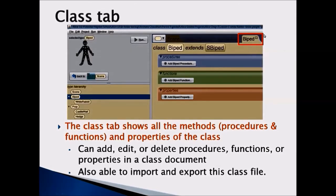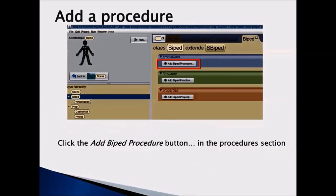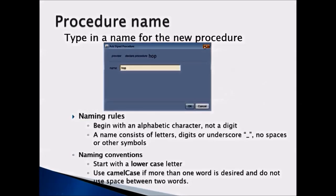When we are in the biped class tab, you can add, edit, or delete procedures, functions, or properties in a class document. In order to add a procedure, click on the Add Biped Procedure button in the procedures section. Then give a procedure name — type in a name for the new procedure, and always follow the naming rules and naming conventions.